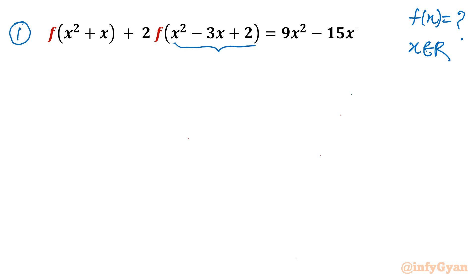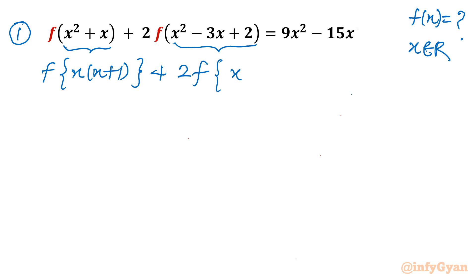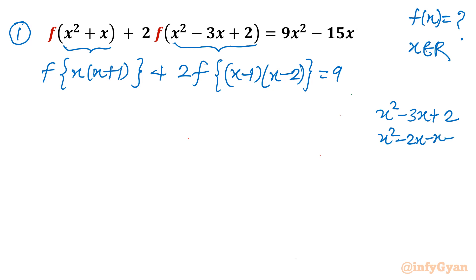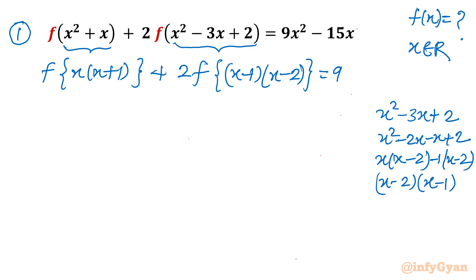The second point I will take factorization of these two brackets. The first bracket is very easy — we will write f times x(x+1). The second bracket we can write as twice of f of (x-1)(x-2). You can take factorization of x²-3x+2 by writing x²-2x-x+2, taking x common from the first two terms giving (x-2), and minus 1 common from the last two terms giving the same (x-2). So factorization is (x-1)(x-2). The right hand side is 9x²-15x.